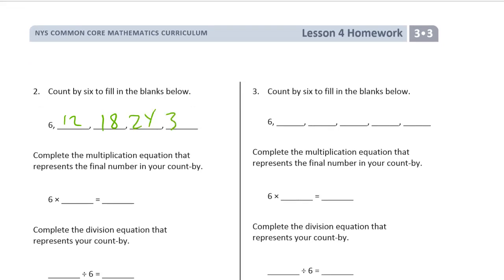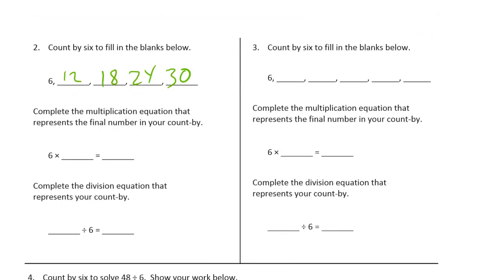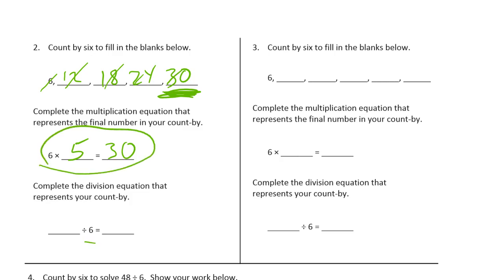Complete the multiplication equation that represents the final number in your count by. The final number is thirty, which is our product. How many sixes was that? One, two, three, four, five — five sixes. For the division equation, thirty is our dividend, six is our divisor, and five is our quotient.